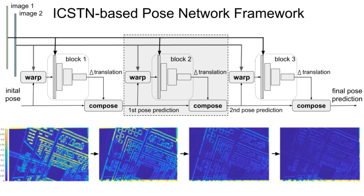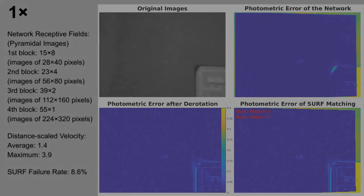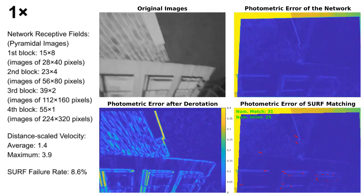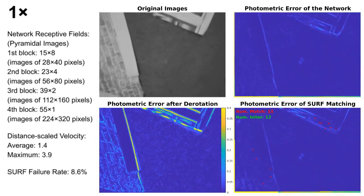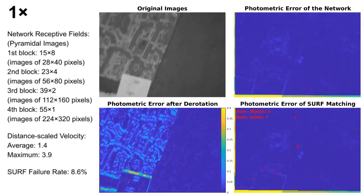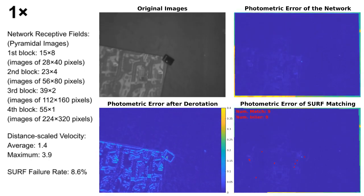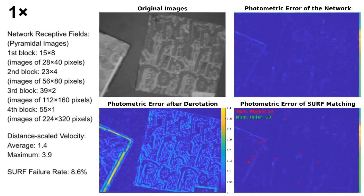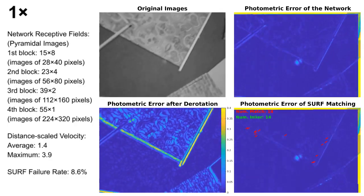As the prediction is refined by more blocks, there is less relative motion and photometric error between the input concatenated images. The shown flight sequence is collected by a downward-facing camera mounted on an MAV in manual flight. The network being evaluated is the one in the fourth row of Table 3, and it has four blocks for pyramidal images.